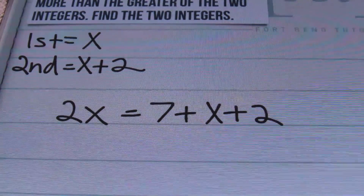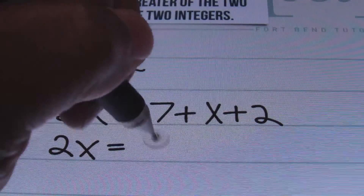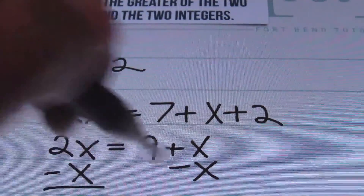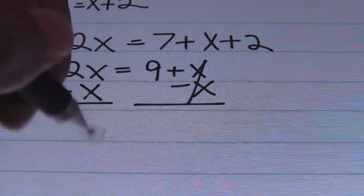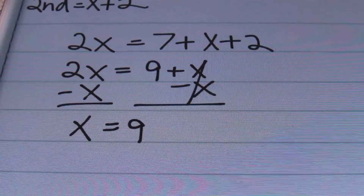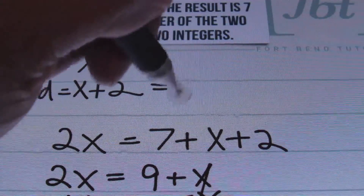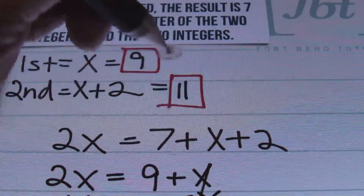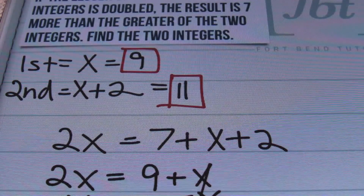From here, I combine like terms. On the right side, 7 plus 2 gives me 9, so this becomes 2X equals 9 plus X. I'll subtract X from both sides to get the variables on one side. The X's cancel out, and 2X minus 1X is just X, which equals 9. So 9 is the smaller of the two consecutive odd integers. Going back to the definitions: X equals 9, and 2 more than that is 11. Once again, 9 and 11 is the solution. Make sure you define your numbers and set up your equation correctly, and you'll have much success with consecutive odd integer word problems.